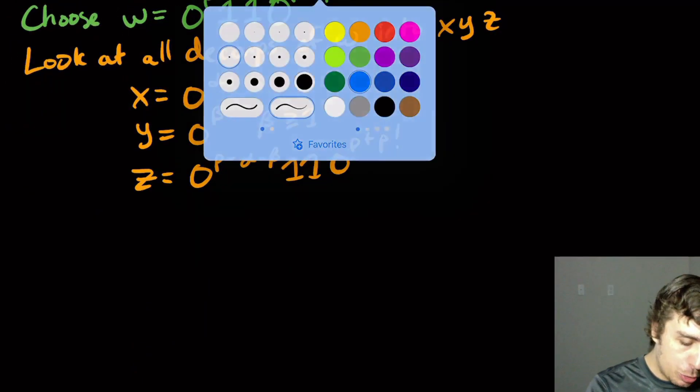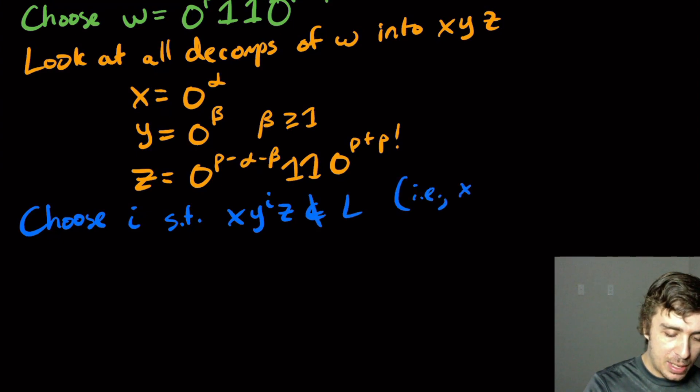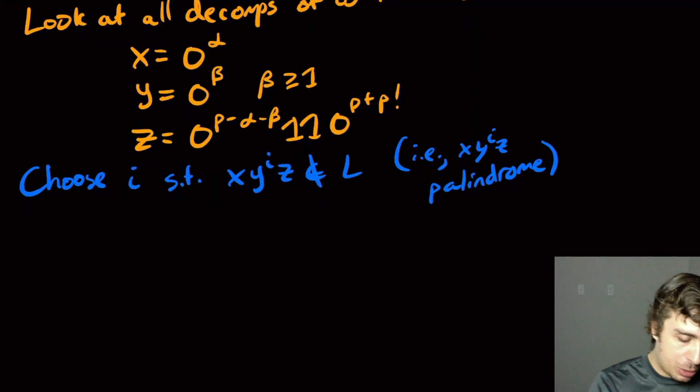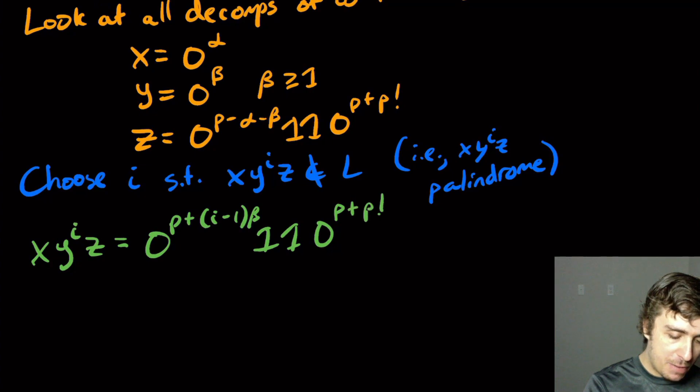Okay, so now what we want to do is we want to choose an I, an I such that X, Y to the I, Z is not in L. In other words, X, Y to the I, Z is a palindrome. Okay, because that's what it means to not be in the language. Okay, so let's actually compute what this string is. So X, Y to the I, Z, that's going to be 0 to the P plus I minus 1 beta, the two ones in the middle, and then 0 to the P plus P factorial.